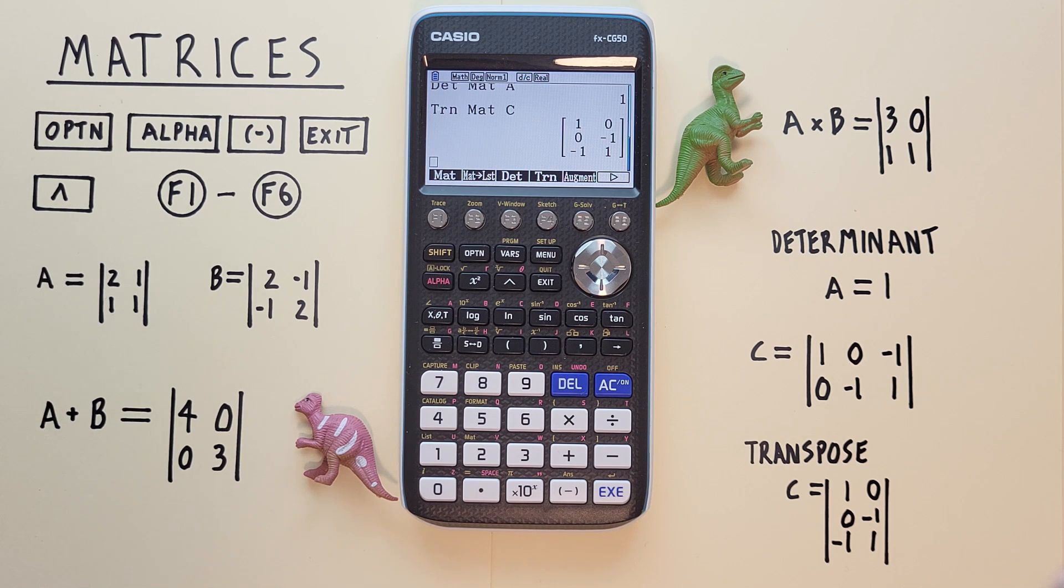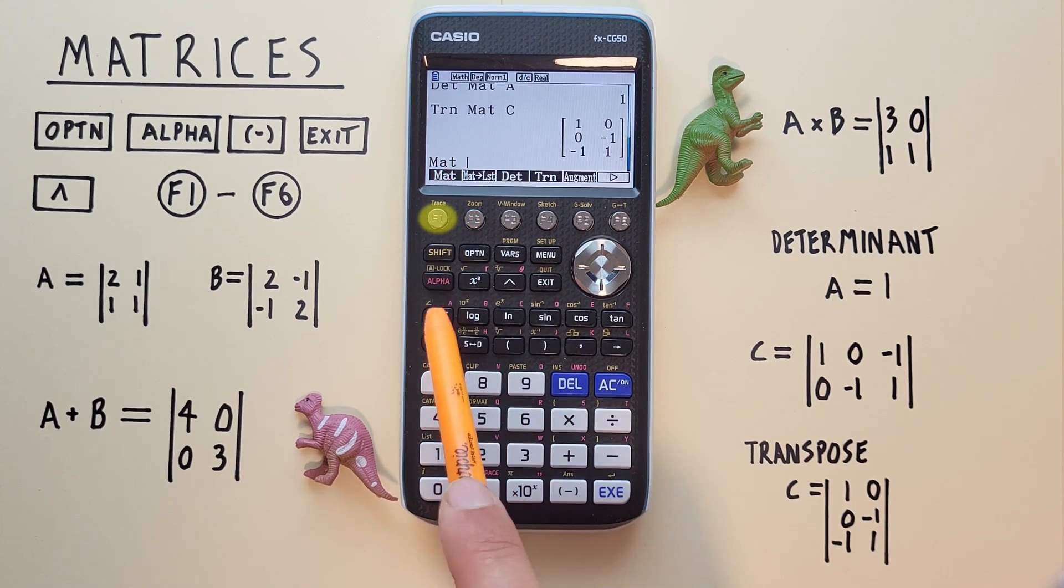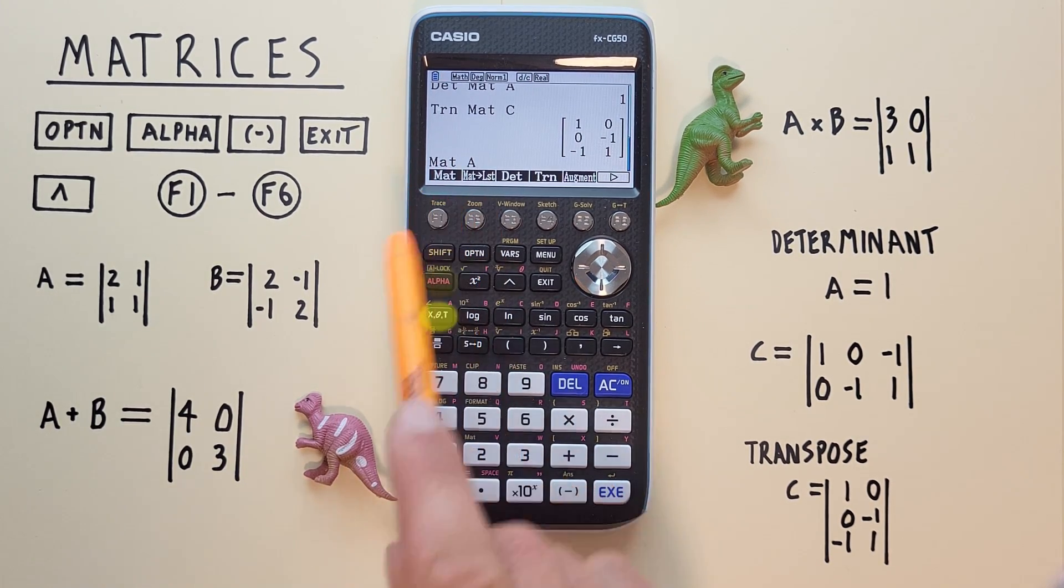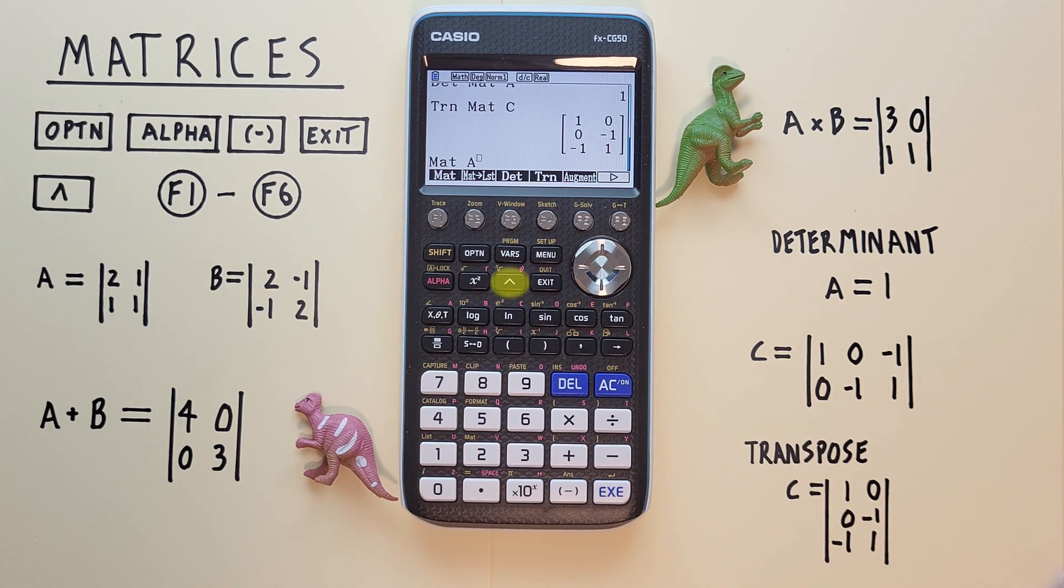What if we want to inverse a matrix? Let's inverse our A matrix. To do that all we have to do is raise the matrix to the power of negative 1. So we start by putting our alpha A matrix on the screen, and then using the up arrow for the exponent and then a negative 1. Hit EXE, and we see our A matrix has been inversed.